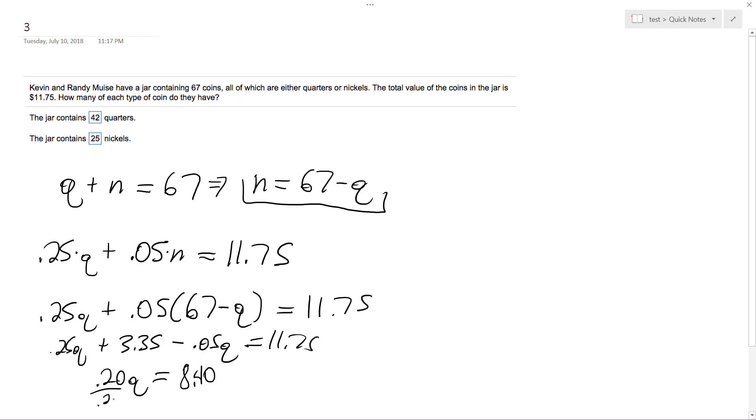Divide by 0.20, divide by 0.20. I was supposed to block this out... and then I end up with Q. Yeah, it gets me 42 quarters.